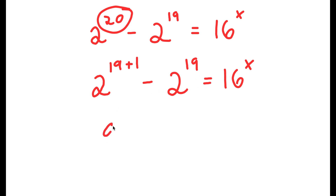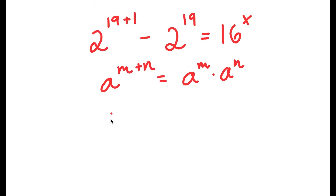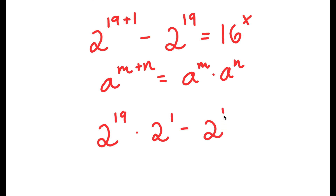If I have something in the form a to the power of m plus n, this equals a to the power of m times a to the power of n. So in this case, 2 to the power of 19 plus 1 equals 2 to the power of 19 times 2 to the power of 1. Then I have this minus 2 to the power of 19 is equal to 16 to the power of x.